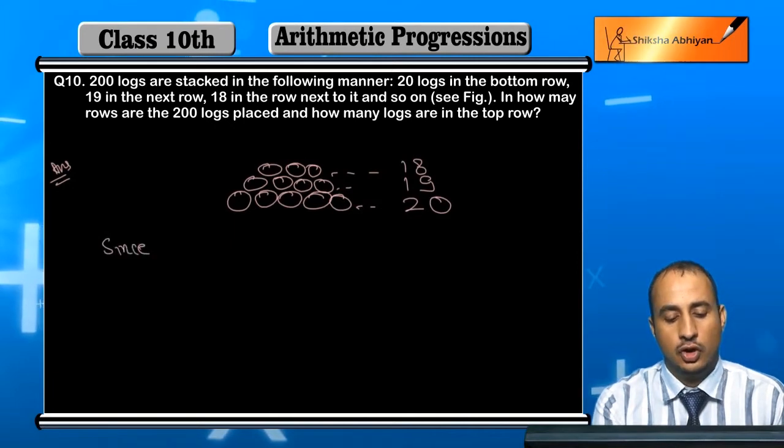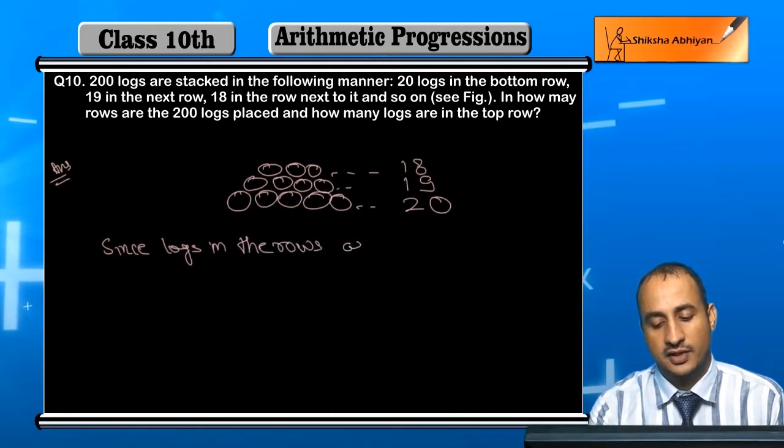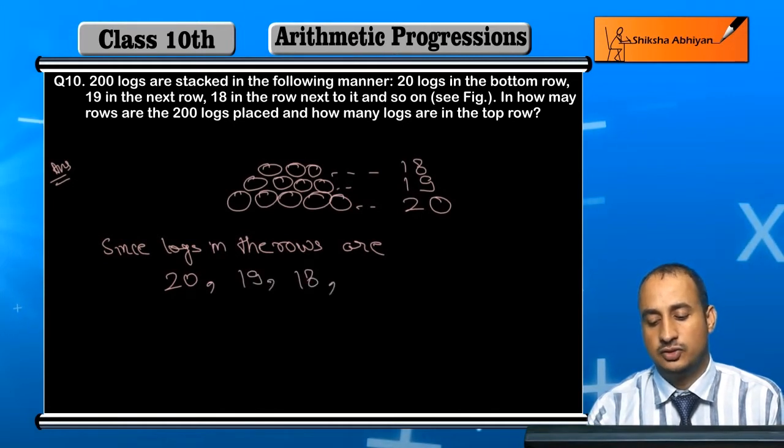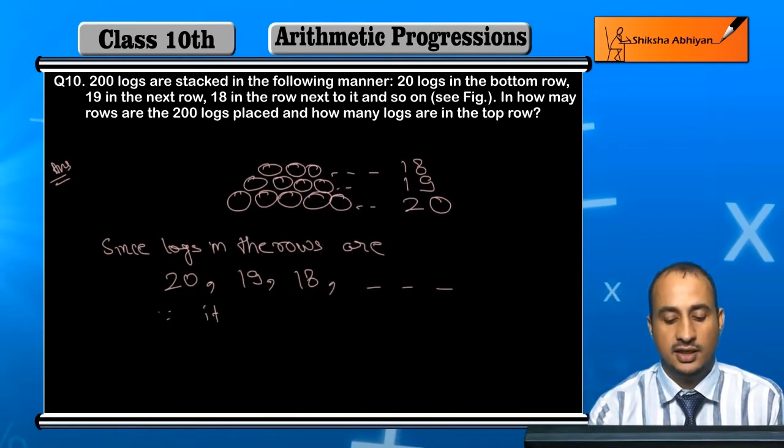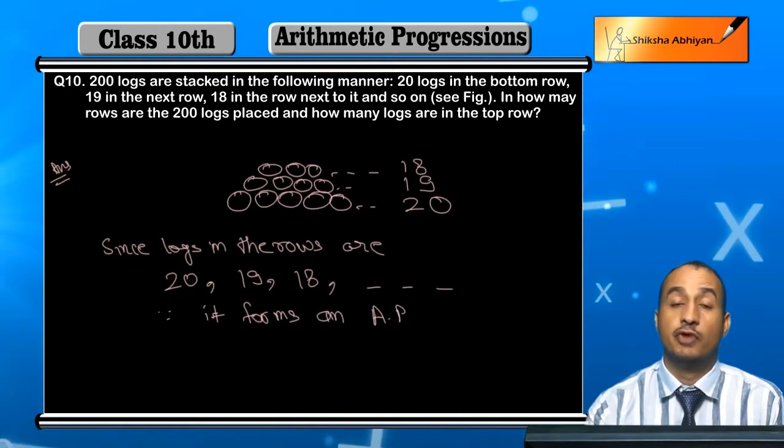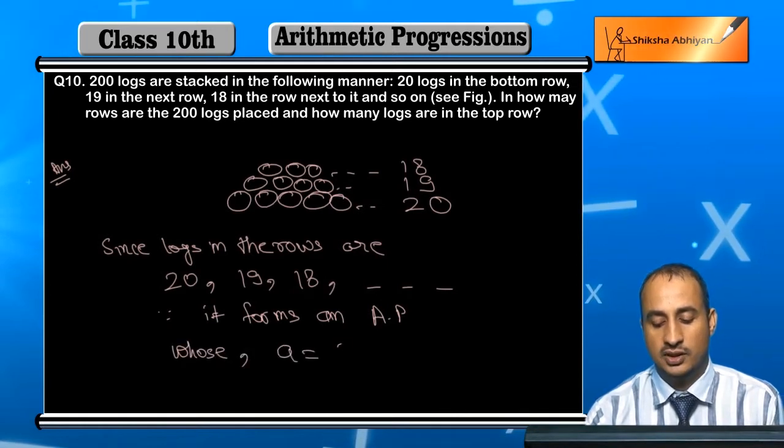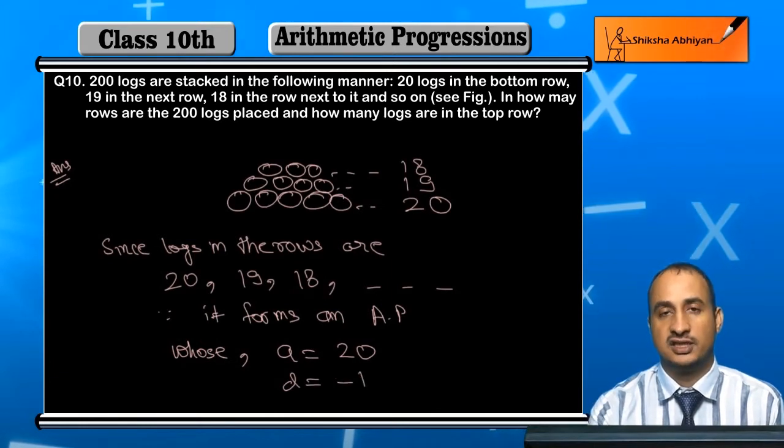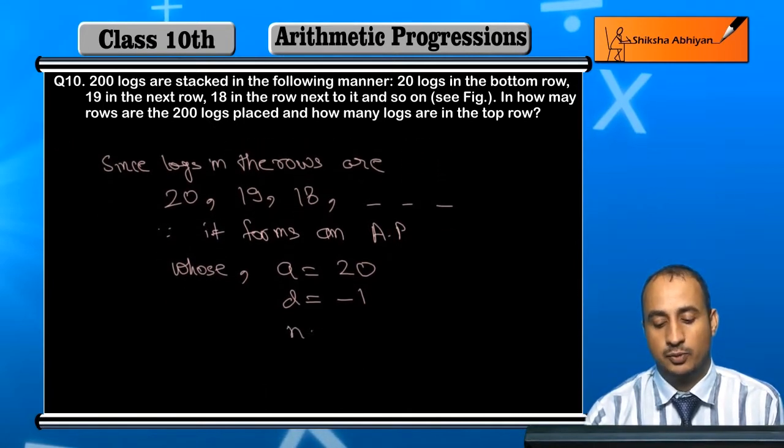Since logs in the rows are 20, 19, 18 and so on, it forms an AP (arithmetic progression). Here a is equal to 20 and d is equal to minus 1, because every time the difference is minus 1. And n here we have to find.